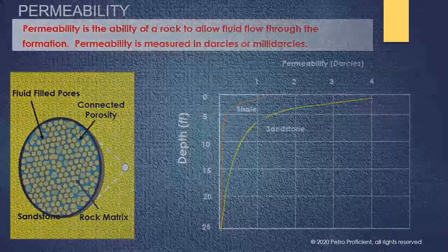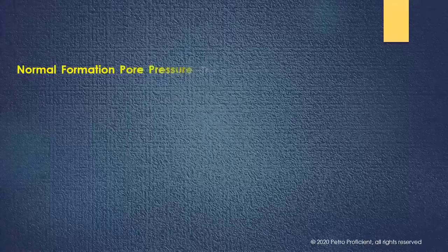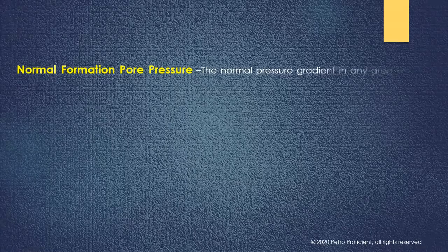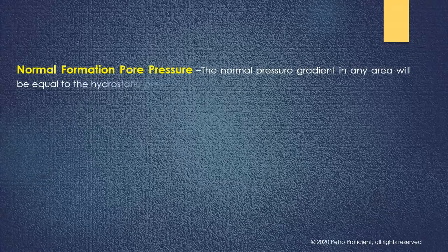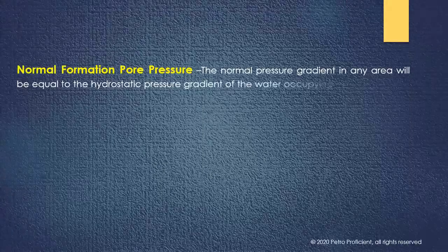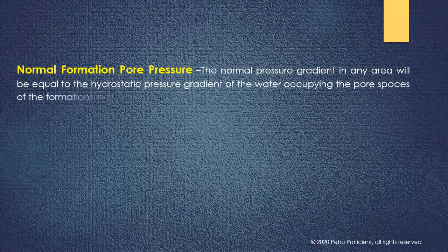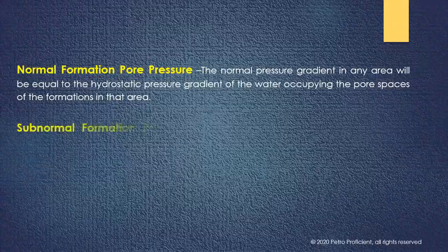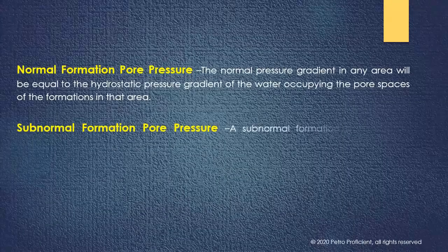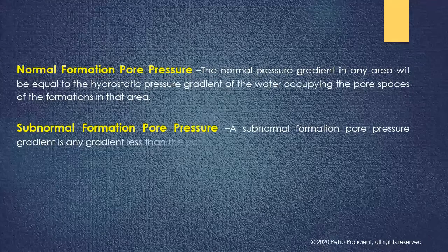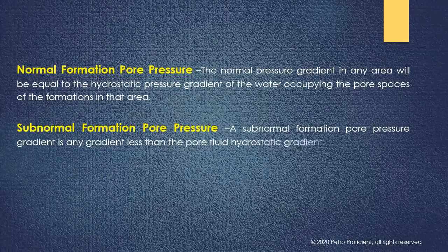Formation pressure regimes are classified into normal, subnormal, and abnormal pressures. The normal pressure gradient in any area will be equal to the hydrostatic pressure gradient of the water occupying the pore spaces of the formations in that area. A subnormal formation pore pressure gradient is any gradient less than the pore fluid hydrostatic gradient. Abnormally high formation pressure gradients are any formation pressure gradients higher than the normal hydrostatic pressure gradient.